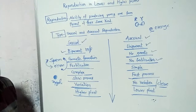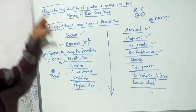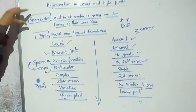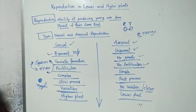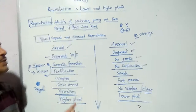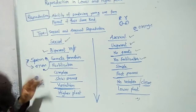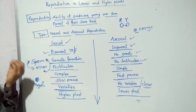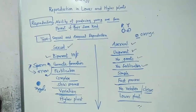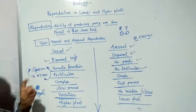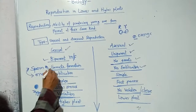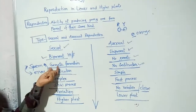In summary, the definition of reproduction is the ability of producing a young one from a parent of the same kind. The major types of reproduction are sexual and asexual. Sexual reproduction means there is a union of two parents, whereas in asexual reproduction no such union is required. Gamete formation — you know very well — gametes are formed after meiosis.